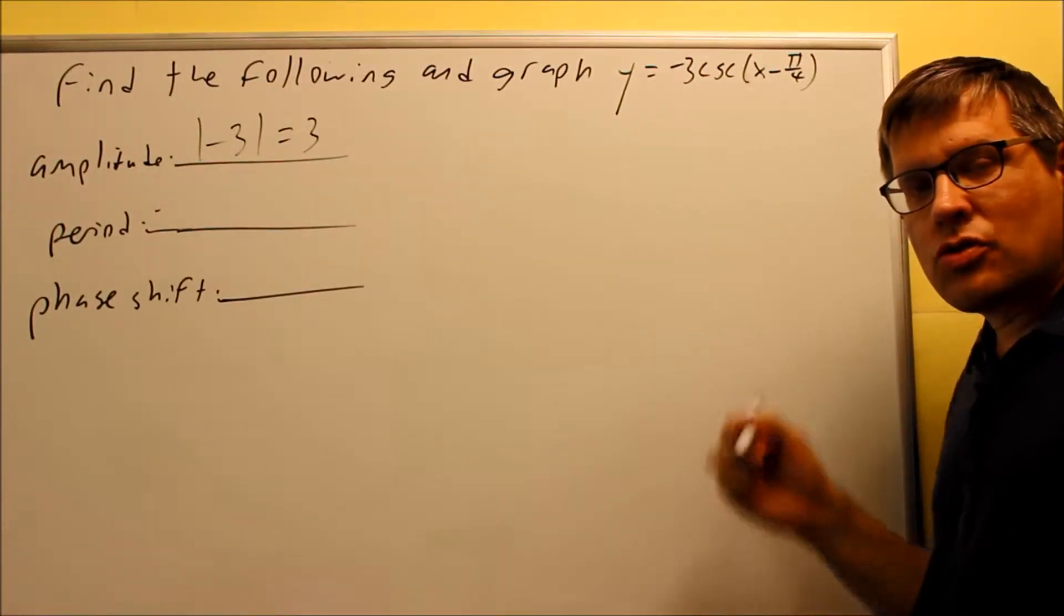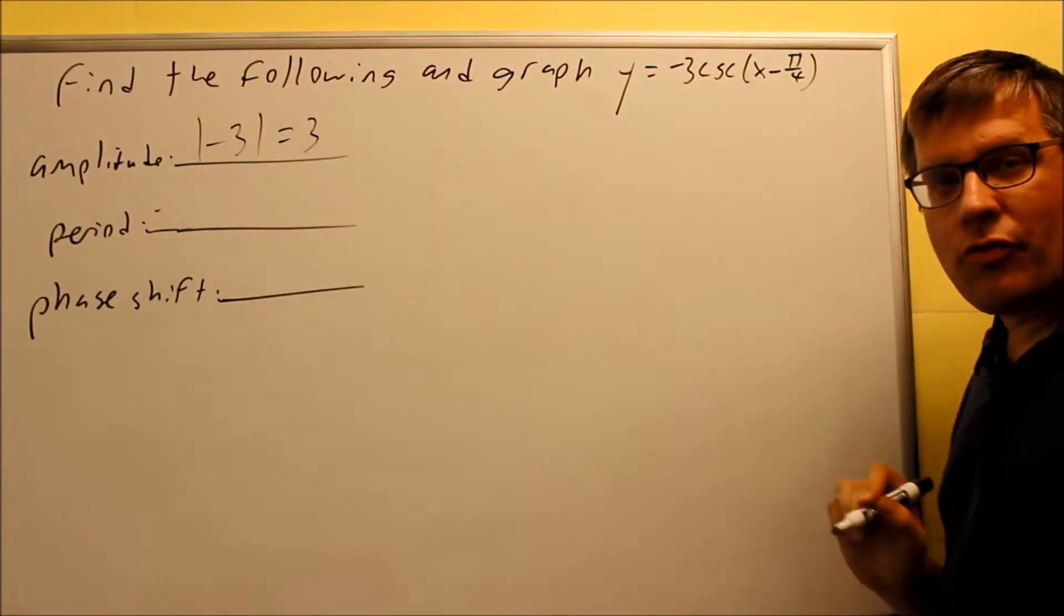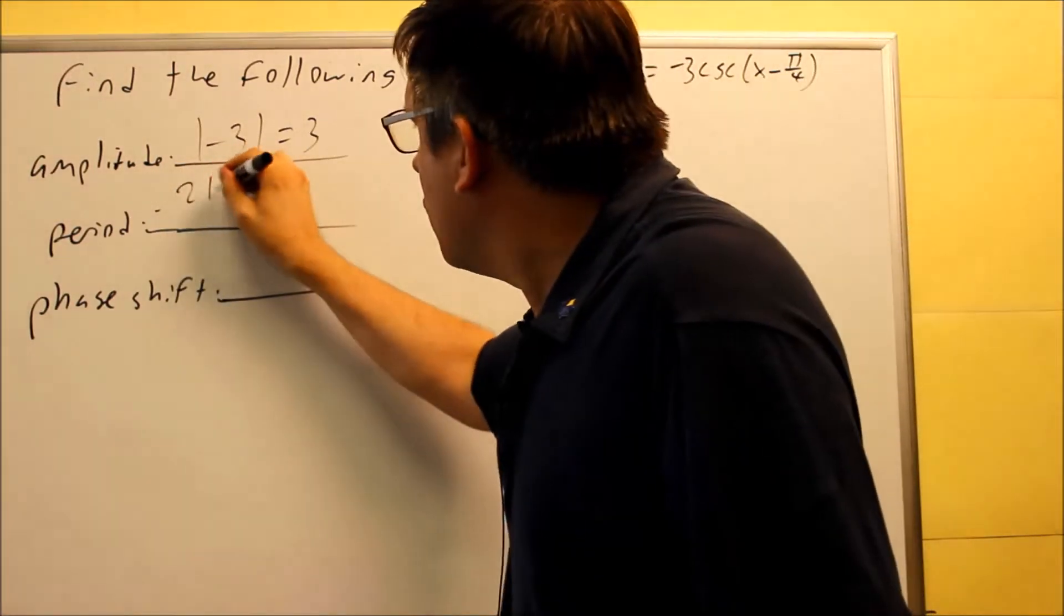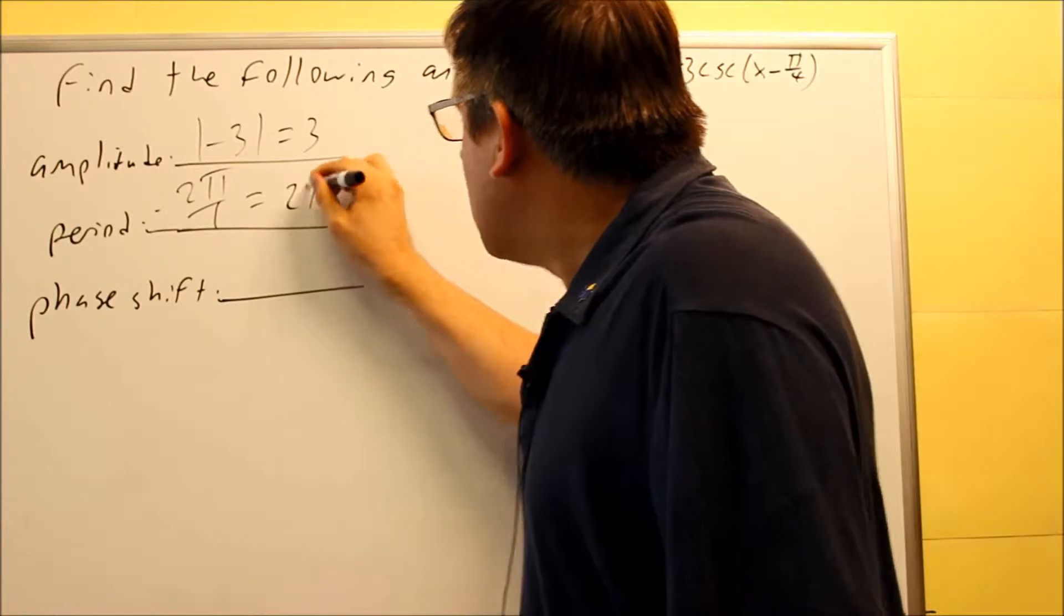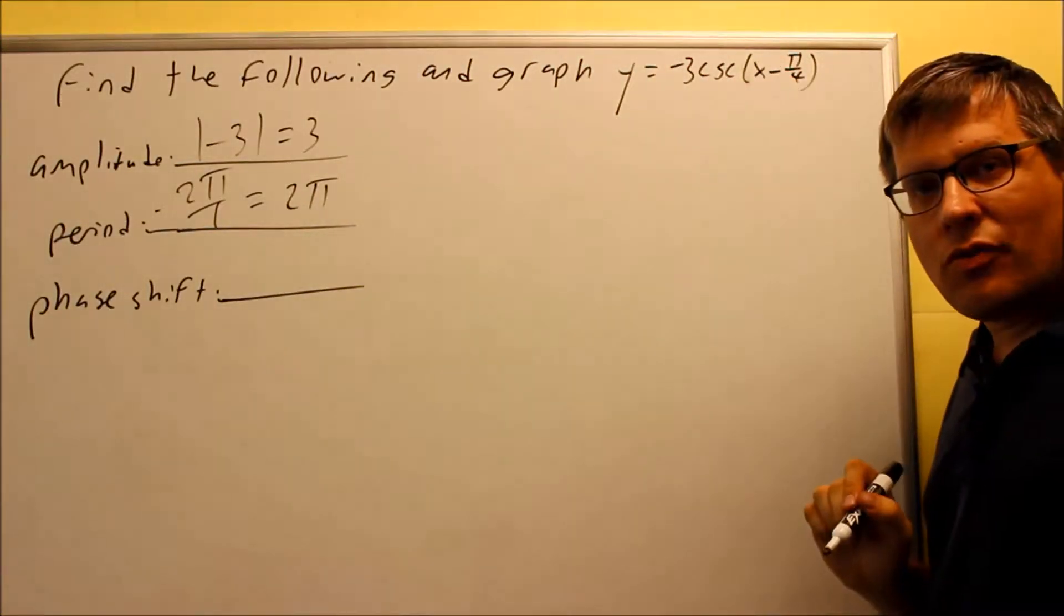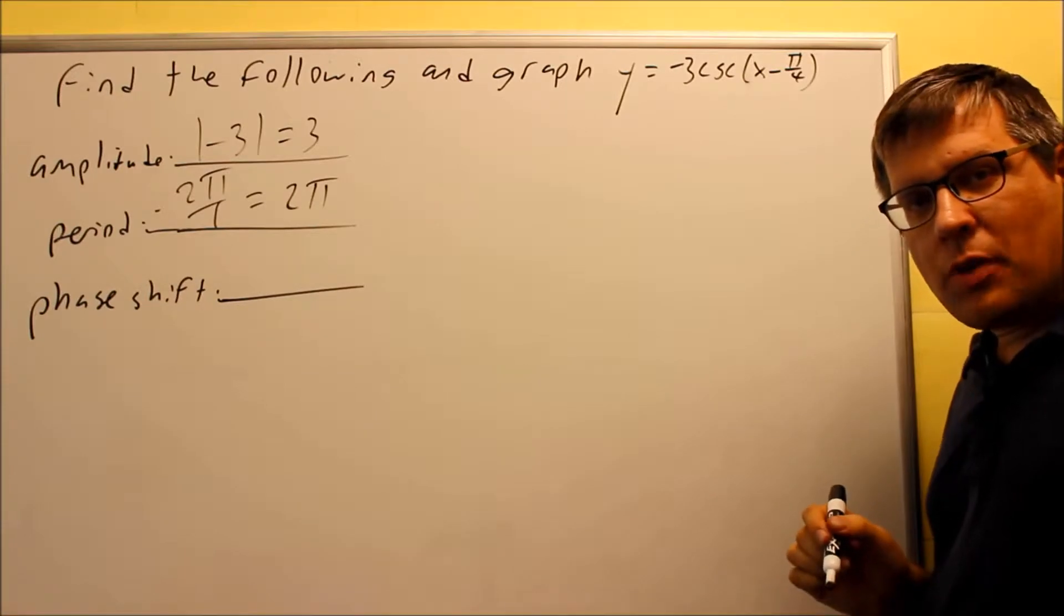Next, we're going to do period. The period is 2 pi divided by the number in front of the x. Now in this case, we have a 1 in front of there. So you're going to do 2 pi divided by 1 means that your period is going to be 2 pi. So anytime you just have a regular x by itself, it's just your normal period, 2 pi.